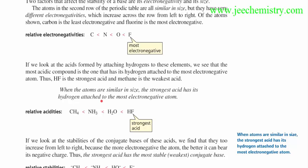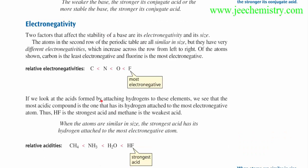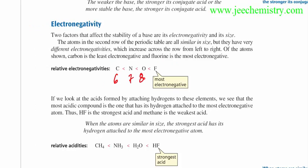We have already completed what is an acid, what is a base — the Arrhenius concept, Lewis concept, and Lowry concept. Now we will learn about the application of acid and base in deciding the relative acidity and basicity of any compound. First of all, you have to know that in the periodic table, going across a period, we have carbon, nitrogen, oxygen, fluorine — atomic number increases in this order, and electronegativity also increases. Fluorine has the highest electronegativity, then oxygen, then nitrogen, then carbon.